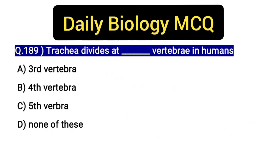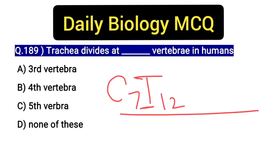Students, here is a question on the vertebral formula. This is based on how we write it: C7, T12. These numbers represent the count of vertebrae in each region — cervical (C7) and thoracic (T12). This is the vertebral formula.